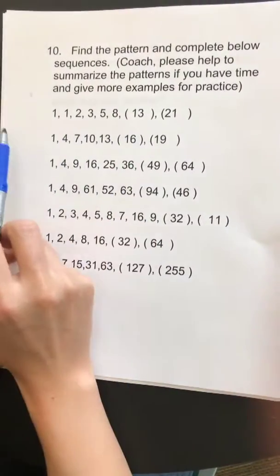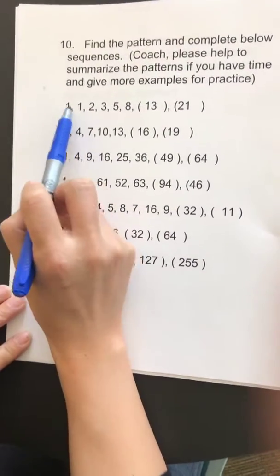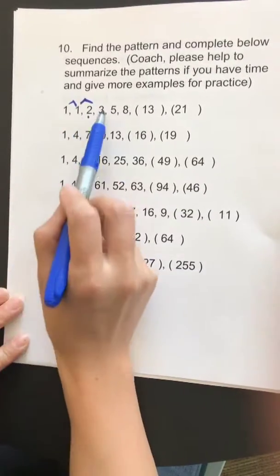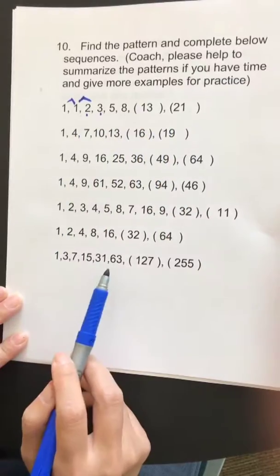For example, the first one. We can see that the first two numbers, you add them up, you get the next one. And then you add the second and third, you get the fourth one, and so on.